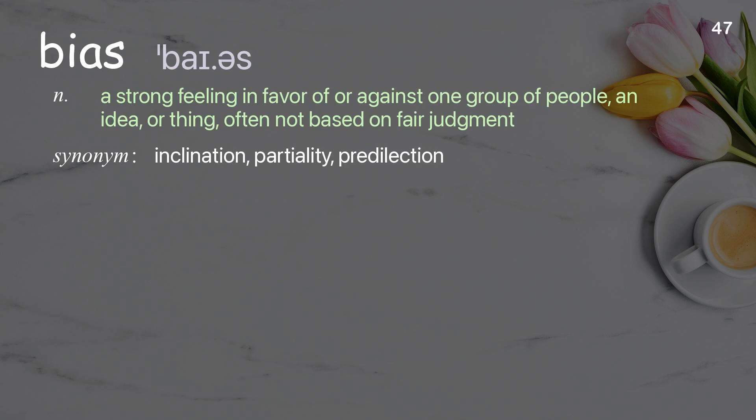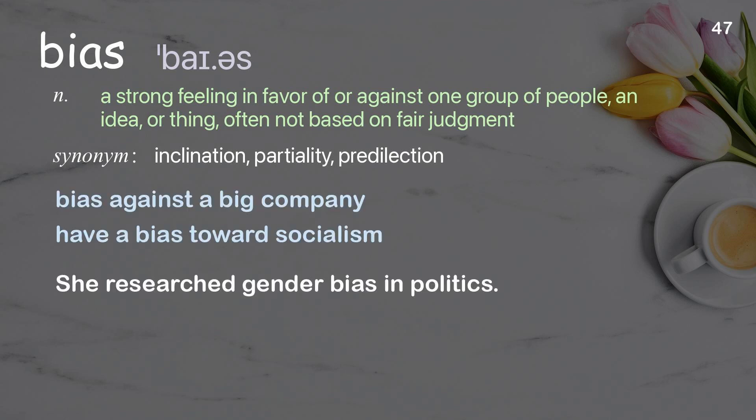Bias: a strong feeling in favor of or against one group of people, an idea, or thing, often not based on fair judgment. Examples: bias against a big company, have a bias towards socialism. She researched gender bias in politics.